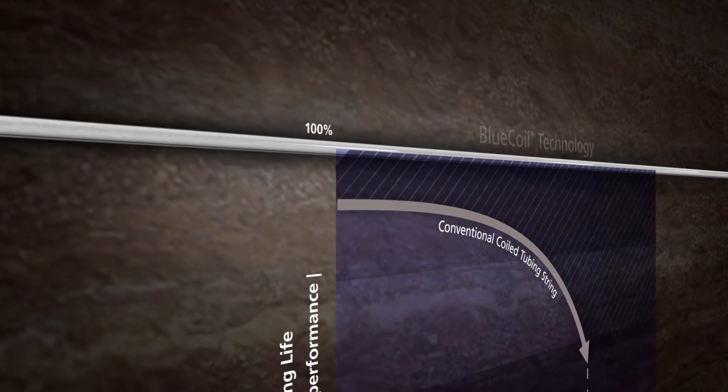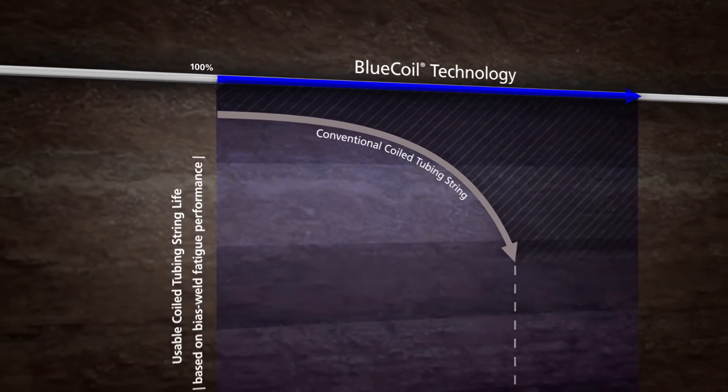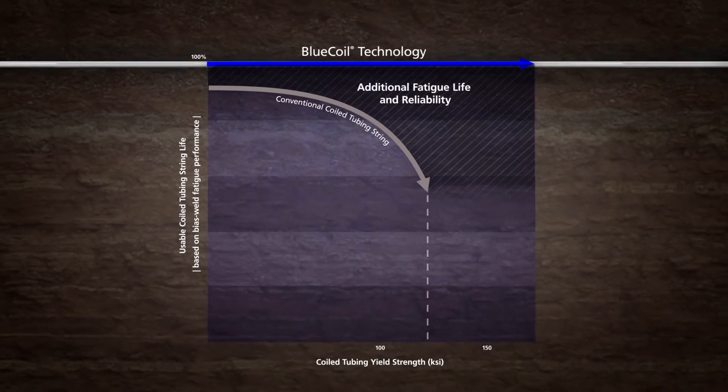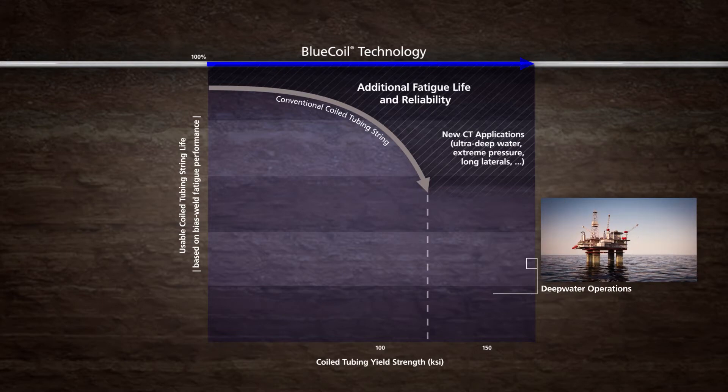In contrast, bias weld and base tube fatigue performance of a blue coil string remains comparable at high strength, bringing additional strength and longer string life for traditional applications of coiled tubing and enabling new opportunities.